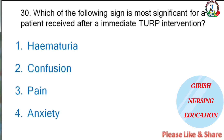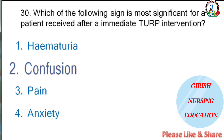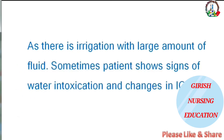Which sign is most significant for a patient after immediate TURP intervention — hematuria, confusion, pain, or anxiety? The correct answer is confusion. As there is irrigation with a large amount of fluid, the patient may show signs of water intoxication and changes in intracranial pressure.